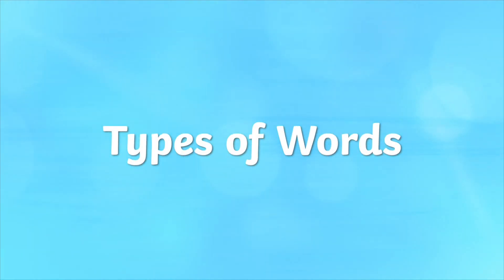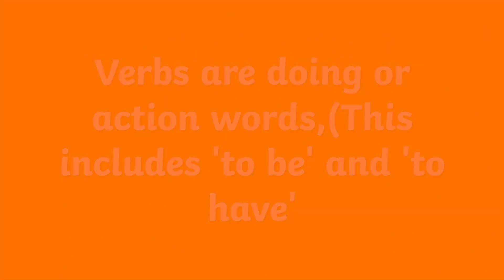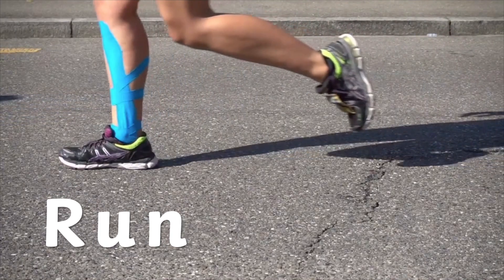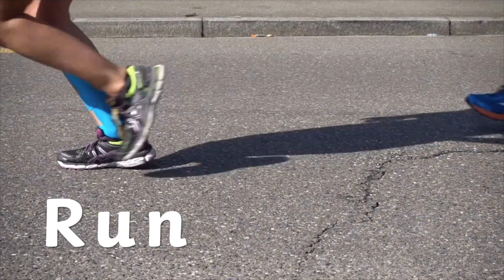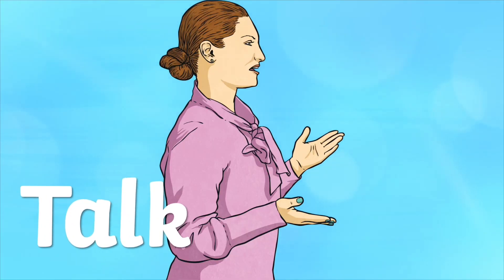Types of words. Verbs are doing or action words. This includes to be and to have. For example, run. Talk.